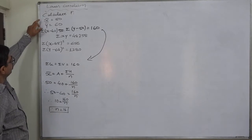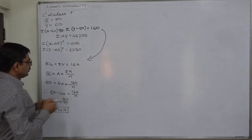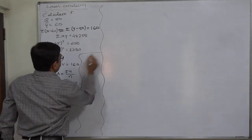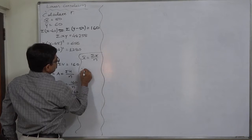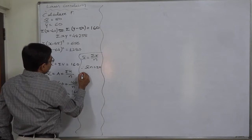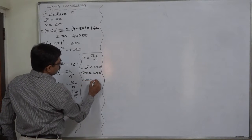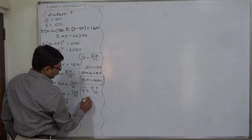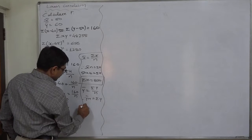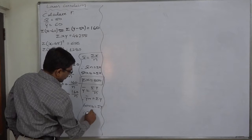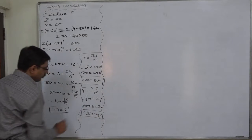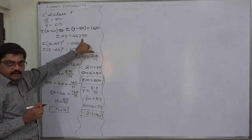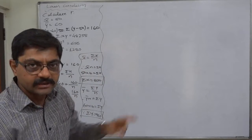Now on the basis of x-bar, y-bar and n, we can find sigma x and sigma y. Since x-bar = sigma x / n, we get sigma x = x-bar × n = 50 × 16 = 800. Similarly, sigma y = y-bar × n = 60 × 16 = 960. We already have sigma XY. So we have three summations: sigma x, sigma y, and sigma XY. But we still need sigma x-squared and sigma y-squared.